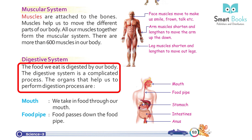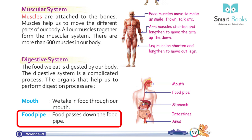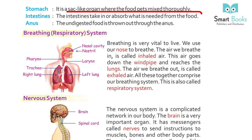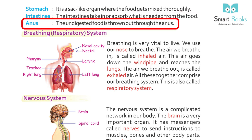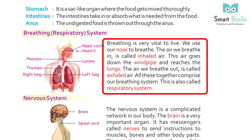The digestive system: the food we eat is digested by our body through a complicated process. The organs that help us perform digestion are: mouth – we take in food; food pipe – food passes down the food pipe; stomach – a sack-like organ where food gets mixed thoroughly; intestines – absorb what is needed from the food; and the anus – through which undigested food is thrown out.